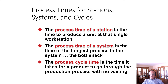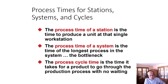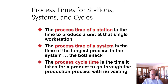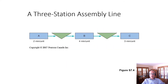Let's introduce some basic concepts. The process time of a station is the time to produce a unit at that single workstation — how long each station takes to serve the customer or process the product. The process time of the system is the time of the longest process in the system — the bottleneck. The process cycle time is the time it takes for a product to go through the entire production process with no waiting.